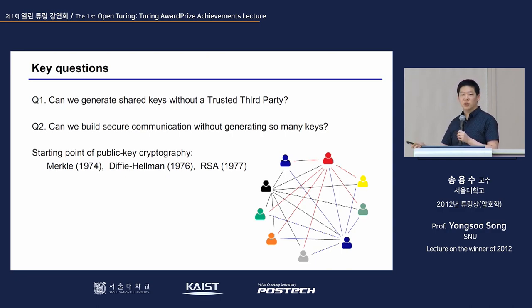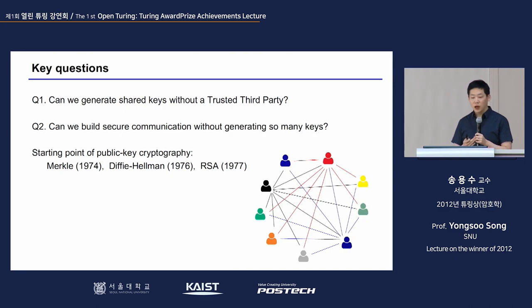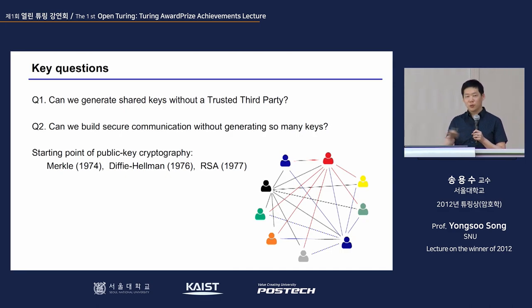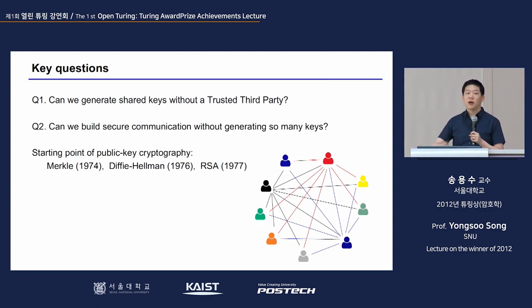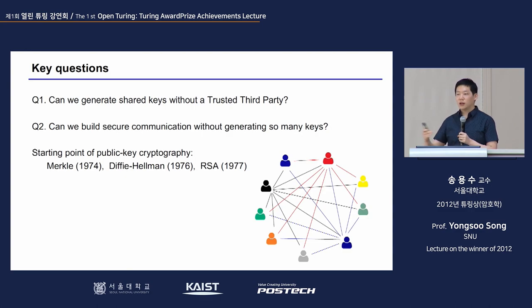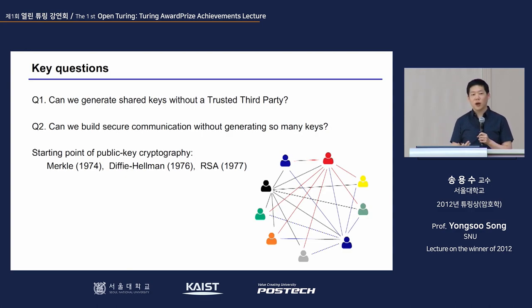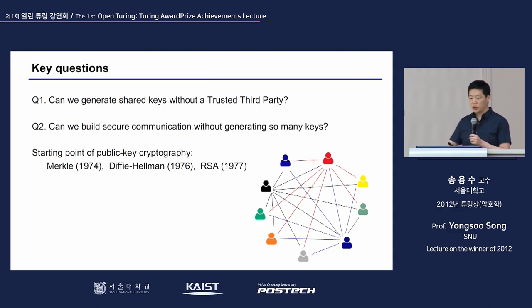How can we generate keys without parties actually meeting and without a trusted third party? Also, how can we build secure communication without generating so many keys? Because if you want different terms of communication, you needed a new key every time, which would be very inefficient. So how can we solve that issue?